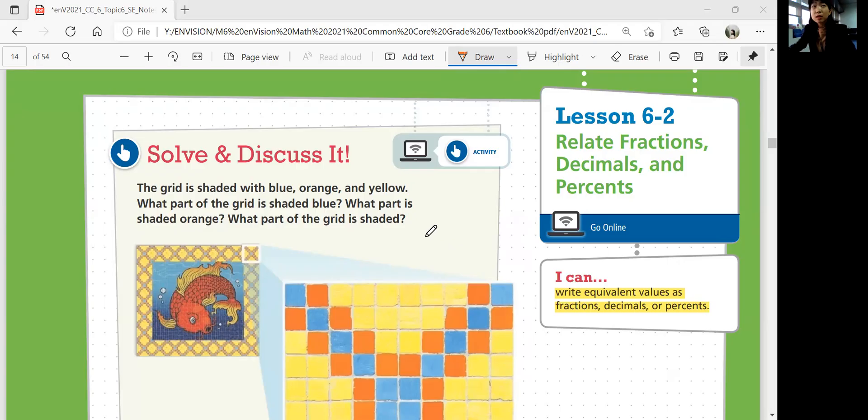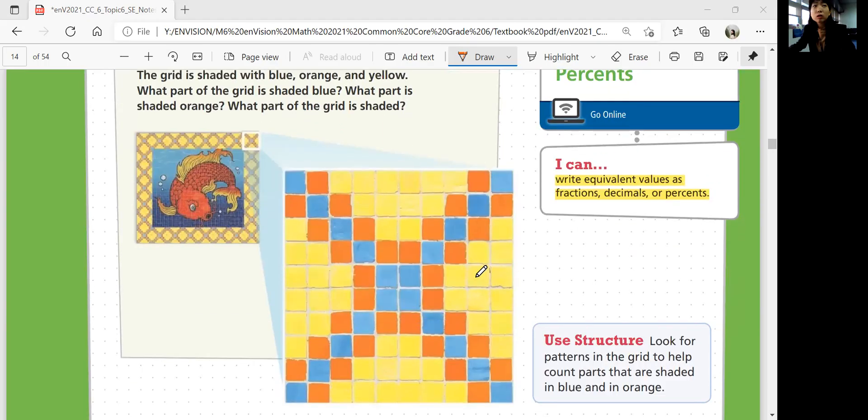Let's start with Solve and Discuss It. The grid is shaded with blue, orange, and yellow. What part of the grid is shaded blue, what part is shaded orange, what part of the grid is shaded. Okay, so we're going to talk about ratios, right? These are yellow, orange, and blue tiles.